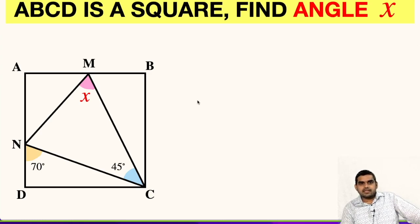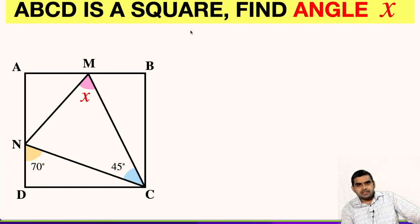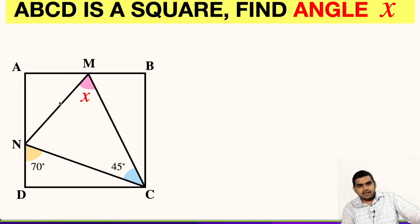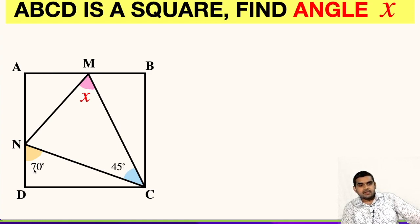Welcome to my YouTube channel. Once again, I am back with another challenging question today. Here ABCD is a square and we have to find the value of angle X. We can see that a triangle NMC is inside this square and two angles are given — one is 45 degrees and the other one is 70 degrees. Let us begin solving this question.